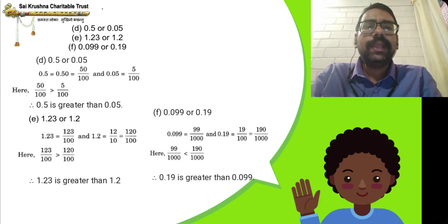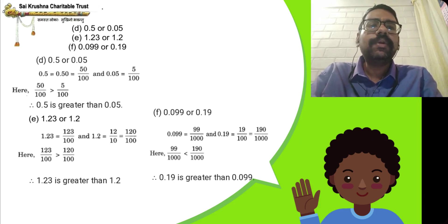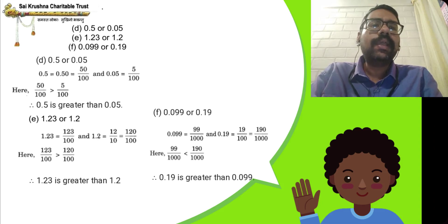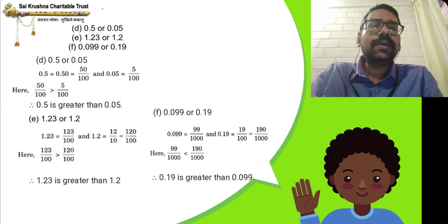Alternatively, 1.23 = 123/100 and 1.2 = 12/10. Converting to like fractions, multiply 12/10 by 10/10 to get 120/100. Since 123 is greater than 120, therefore 123/100 is greater than 120/100.